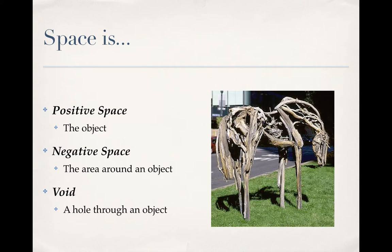In the picture of the horse sculpture here, anything that's wood is the positive space. The negative space is anything around it and also the areas in the structure itself that don't have any wood there, and those holes in the structure are called voids.